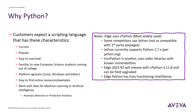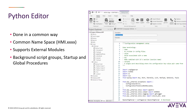Aviva Edge uses CPython, which is one of the most widely used. Unlike some of our competitors that use older, outdated libraries that have known vulnerabilities, Aviva Edge 23 R2 will release with CPython version 3.11.8. And while we know this is not the latest, we've made sure that the product is field upgradable, and Edge Python has fully functioning IntelliSense, just a handy thing when you're editing.